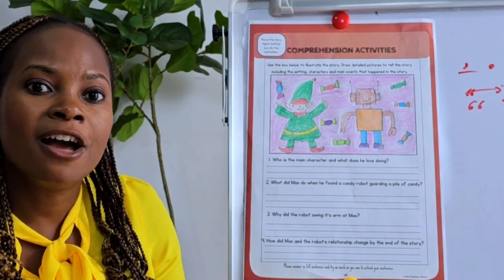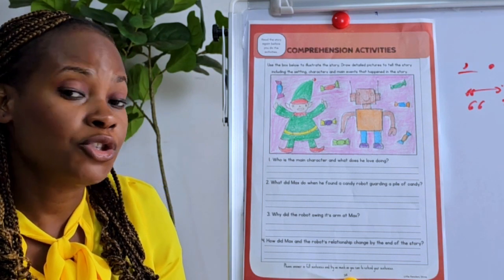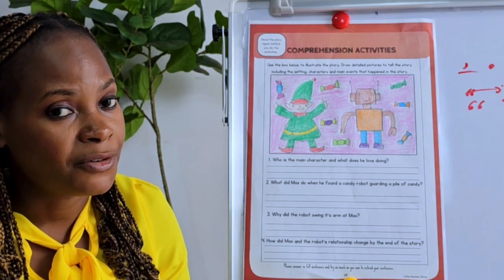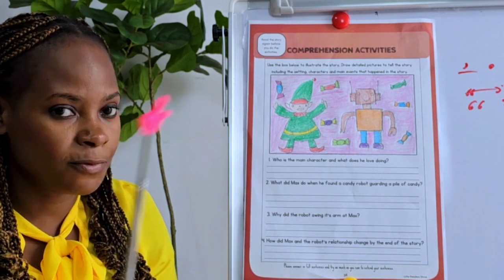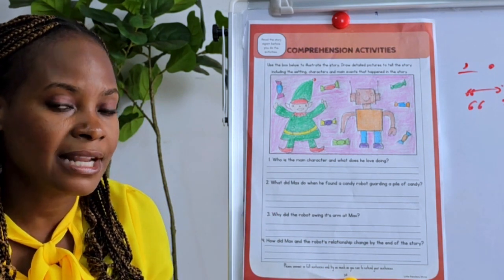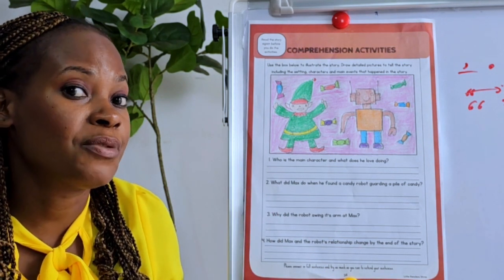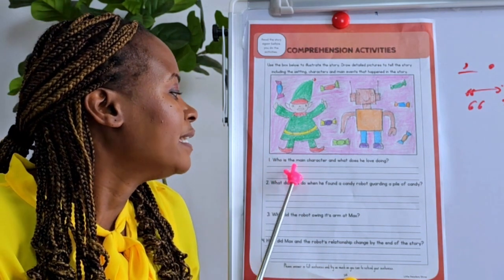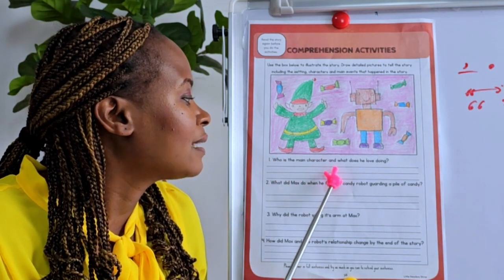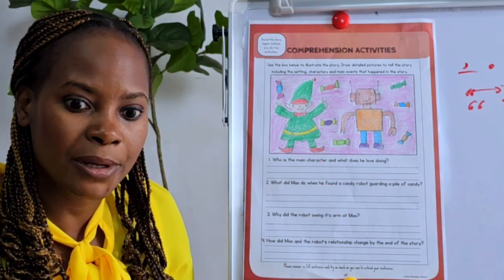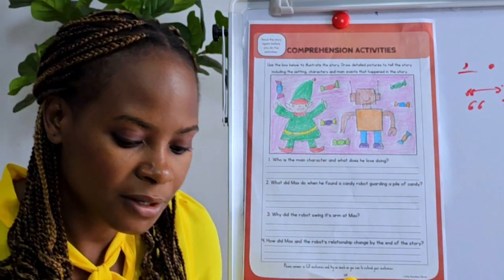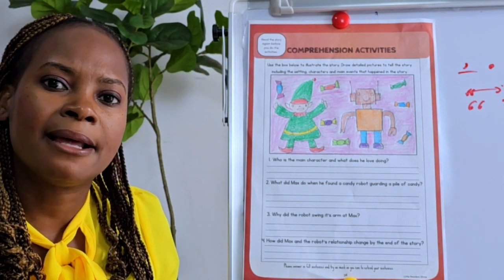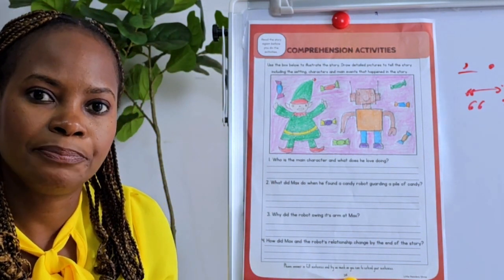For your case you may choose to pause the video and draw the picture, or you may choose to first go through the lesson and then draw your picture afterwards. Okay, who is the main character and what does he love doing? Let's go back to the main story — who is the main character of this story?